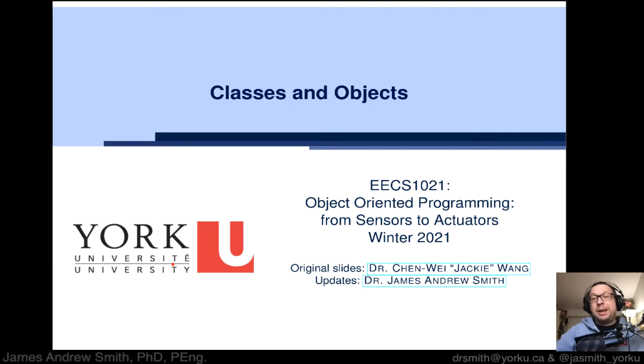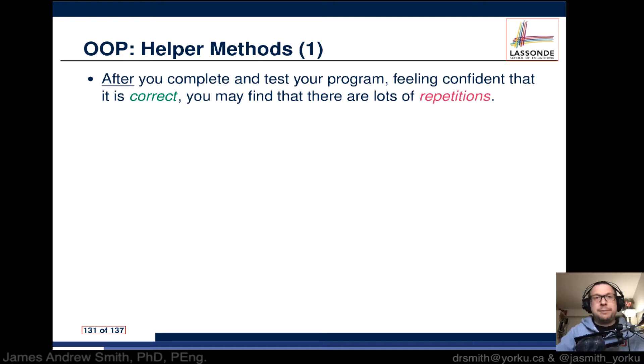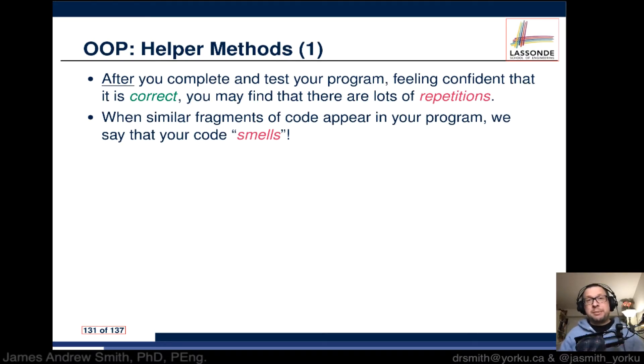Next up we're going to be talking about helper methods. After you complete and test your program, feeling confident that it's correct, you might find that there are little blocks of code in your solution that are repetitious. When similar fragments of code appear in your program, we say that your code smells.